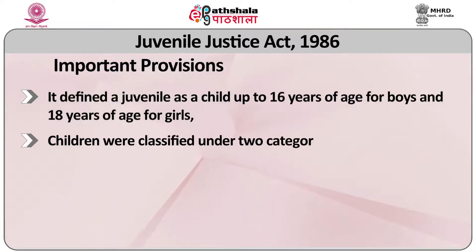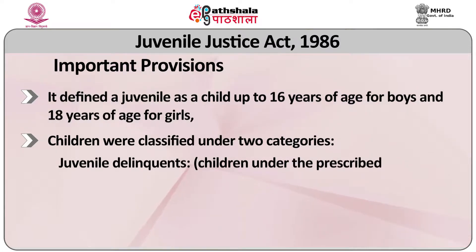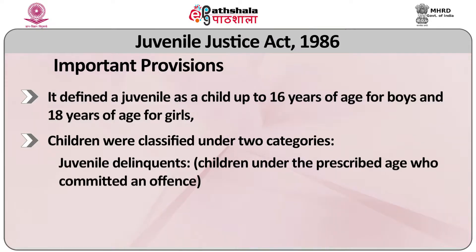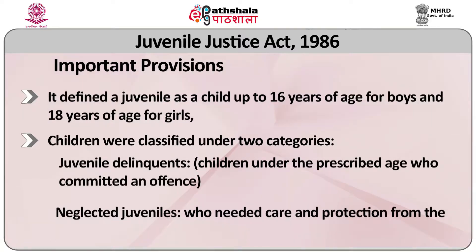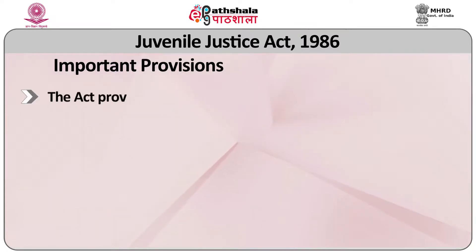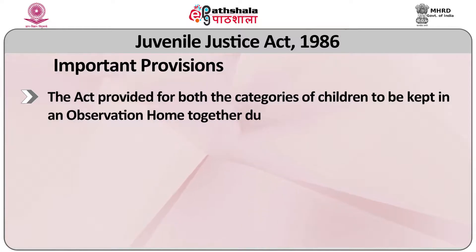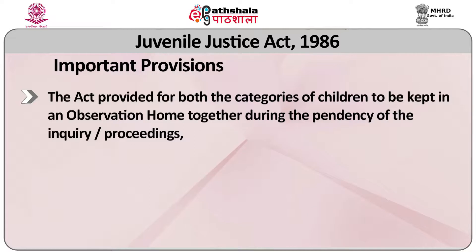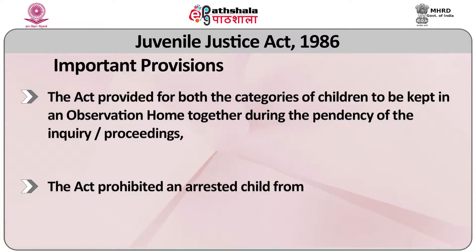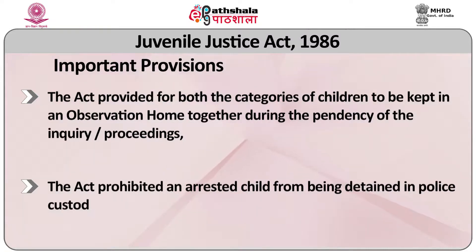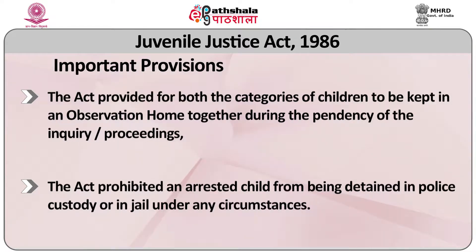Second, children were classified under two categories: juvenile delinquents, who are children under the prescribed age who committed an offense, and neglected juveniles who needed care and protection from the state and state institutions. Third, the act provided for both categories of children to be kept in an observation home together during the pendency of the inquiry or proceedings. Fourth, the act prohibited an arrested child from being detained in police custody or in jail under any circumstances.